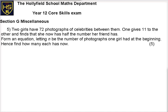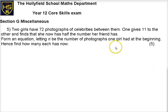Okay, so the final question. This is section G, the miscellaneous skills, and it's mainly algebra skills, but there's a few other bits of problem solving involved in here. It's the last question, question five. So two girls have 72 photographs of celebrities between them. This is a really in-context question because it's about celebrities, which we're all very excited and very interested in right now.